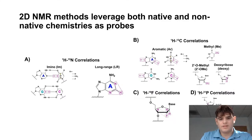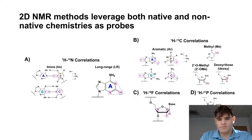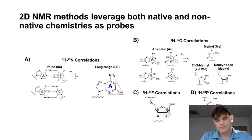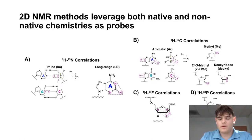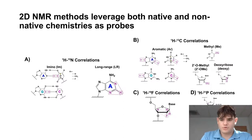In the siRNAs, there are several both native and non-native chemistries that can act as NMR probes. Proton-nitrogen correlations include the amino protons involved in base pairing, as well as a long-range aromatic proton-nitrogen experiment. Proton-carbon correlations come in a variety of versions: aromatics, methyls, 2'-O-methyls, and deoxyribose, and you can select the different correlations by tuning the scalar coupling between the hydrogen and the heteroatom. We also have proton-fluorine correlations possible with these modified oligos, as well as proton-phosphorus correlations.